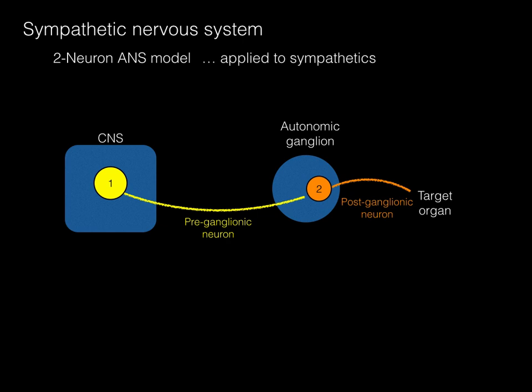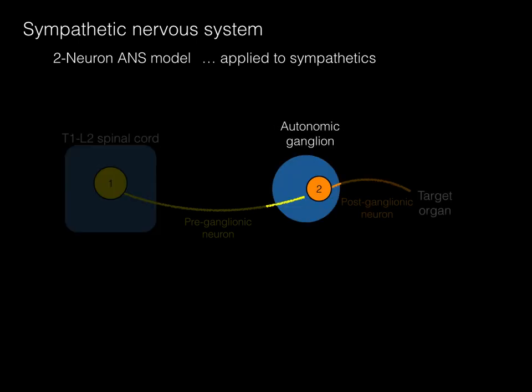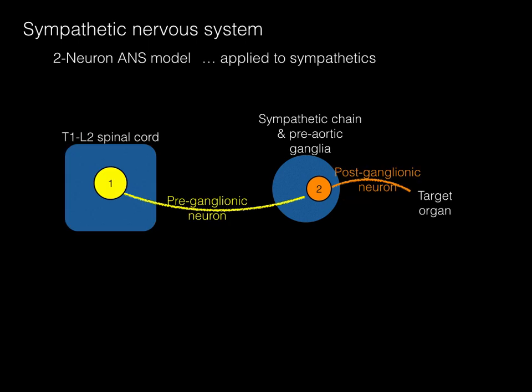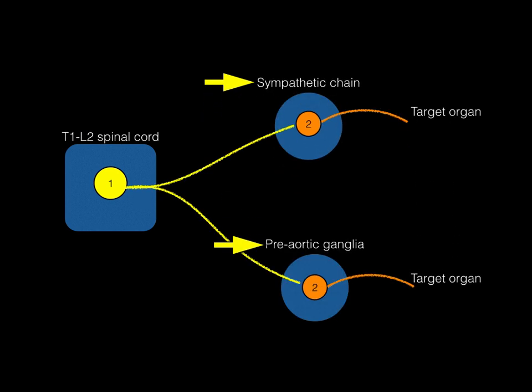Now let's take that model and apply it to sympathetics. The CNS origin for sympathetics is between the T1 and L2 spinal cord levels in the lateral horn, and the autonomic ganglion is twofold: the sympathetic chain and the preaortic ganglia. Let's spread out that two-neuron model to show both the sympathetic chain and preaortic ganglia.